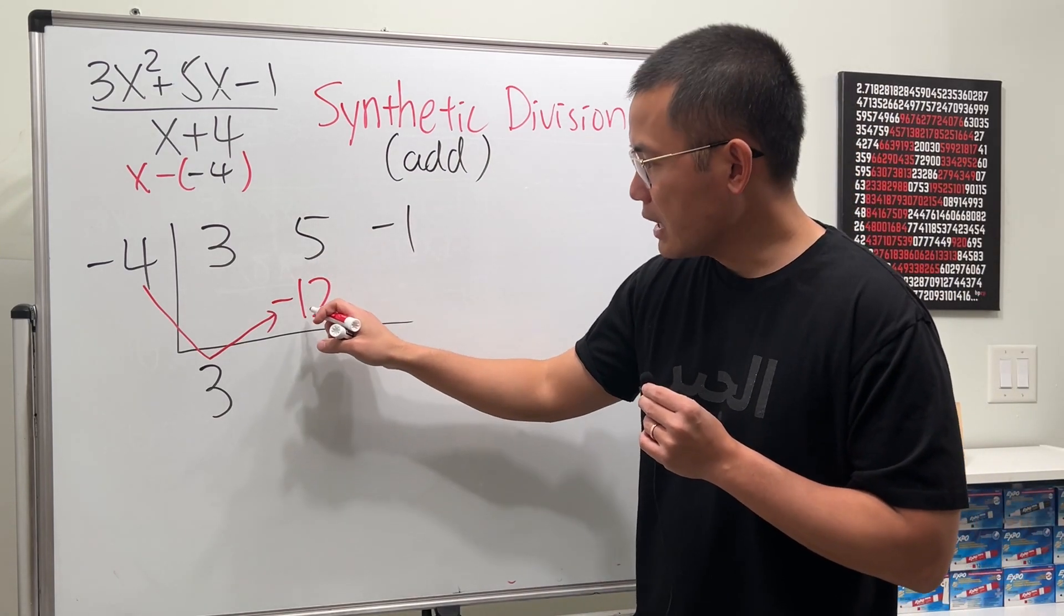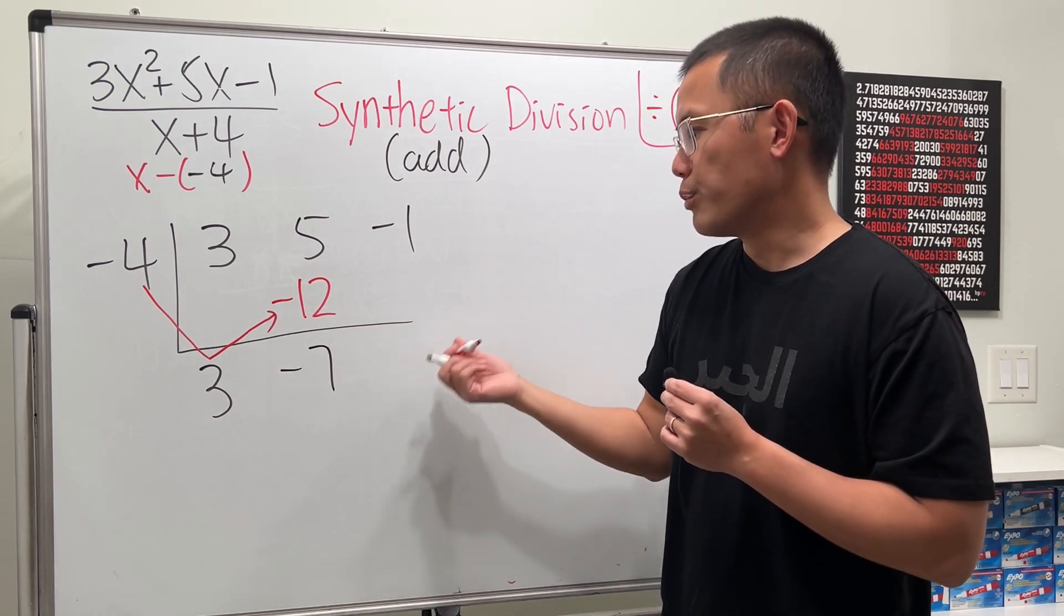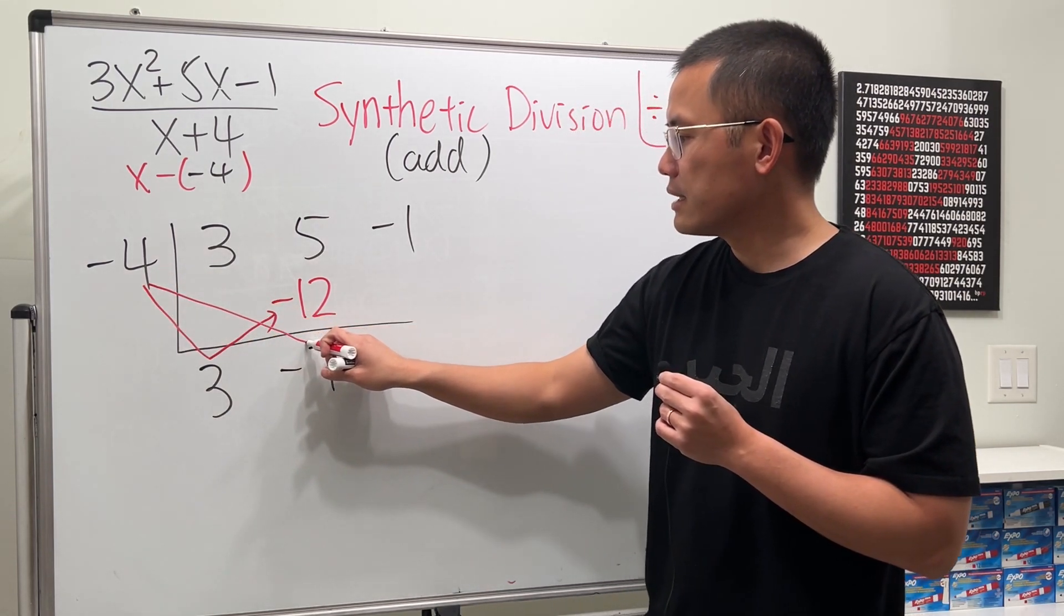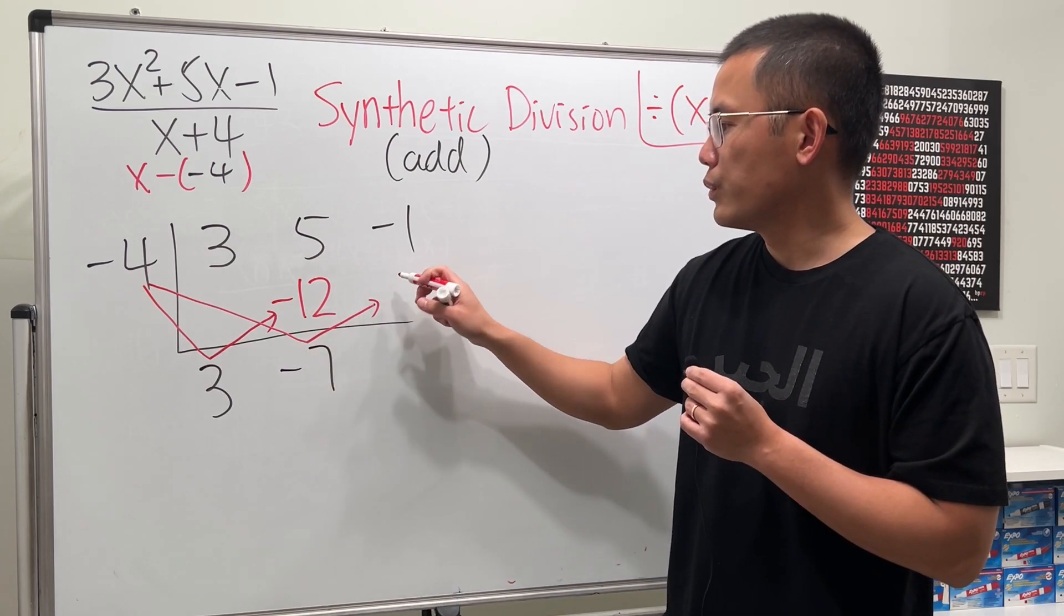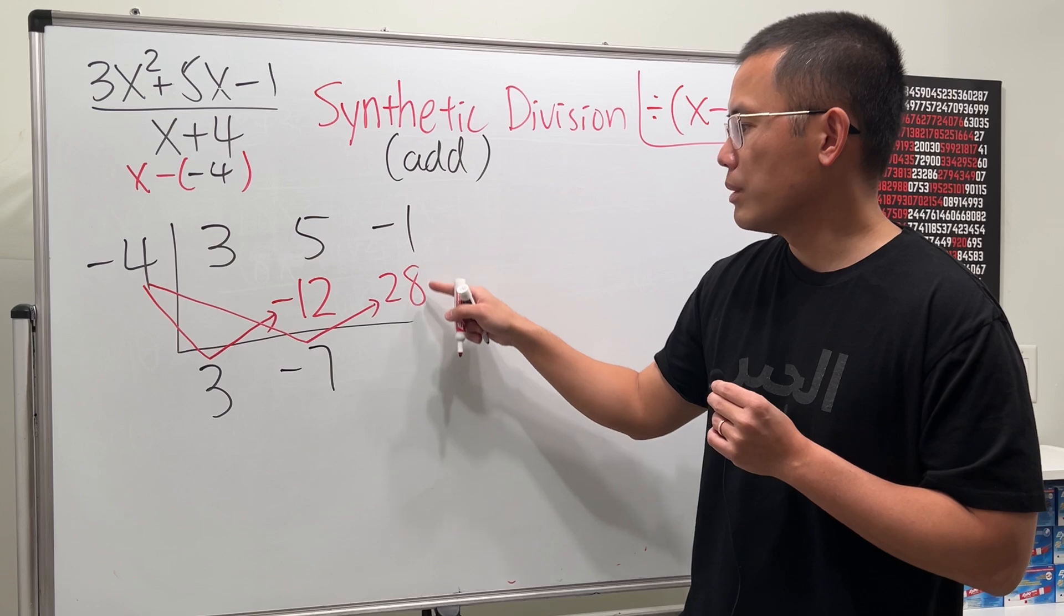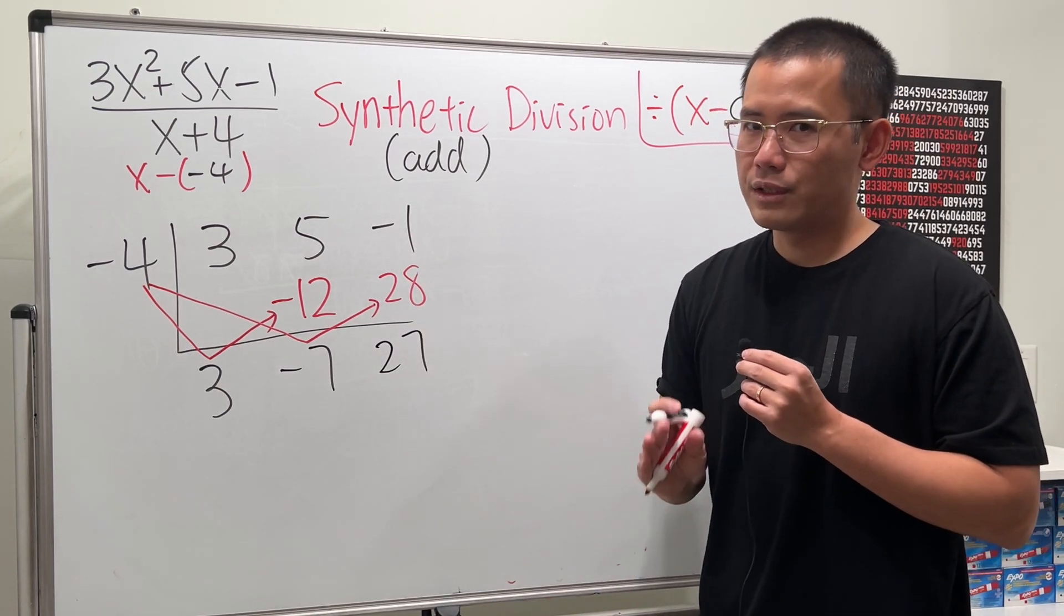Now, 5 plus negative 12 is negative 7. And then you pretty much repeat the same process. You do negative 4 times negative 7. Put it here. Here, we get 28. Add them up. And then you get negative 1 plus 28, which is 27. Guess what? You are done.